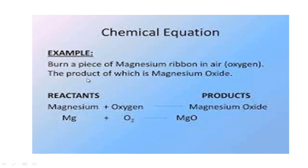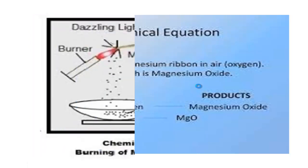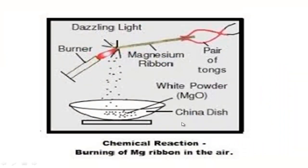Then you write the equation — the short expression of the reaction using formulas. So first write the reaction in language, then say this reaction occurs by the following equation. The equation uses the formula of magnesium, the formula of oxygen molecule, and the formula of magnesium oxide. The reaction is the expression in language; the equation is the short form using formulas.